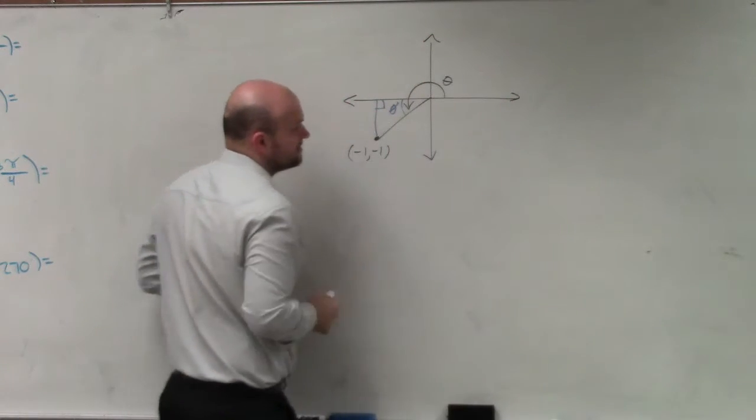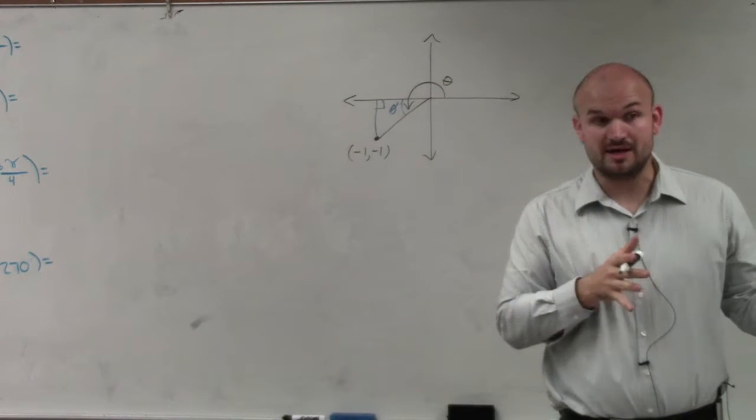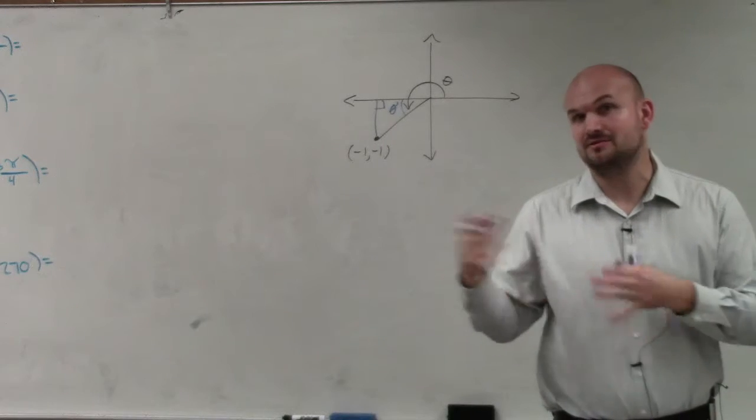What's important about this is when you have a triangle on the coordinate grid, plus and minus is important. Right? If you go to the right, it's positive. Go up, it's positive. Down, left, negative.